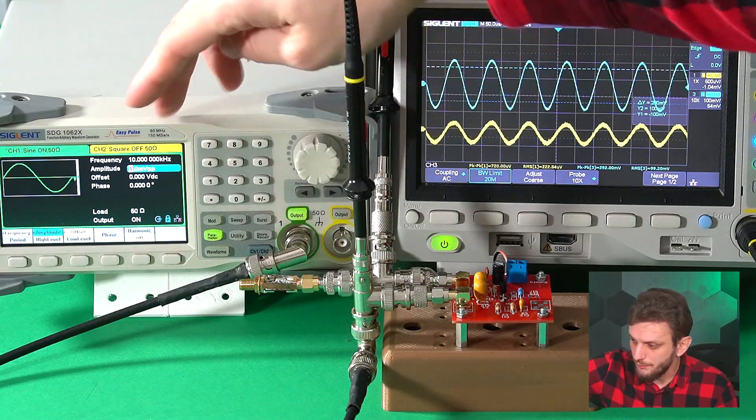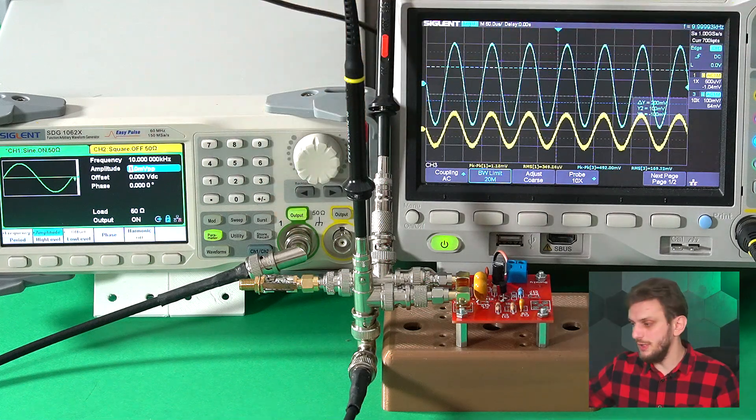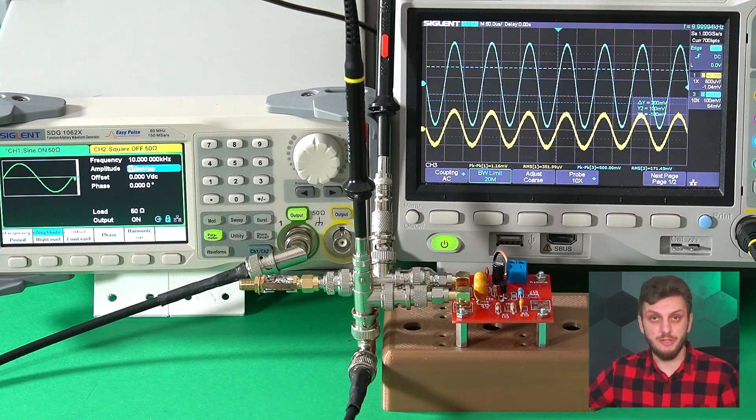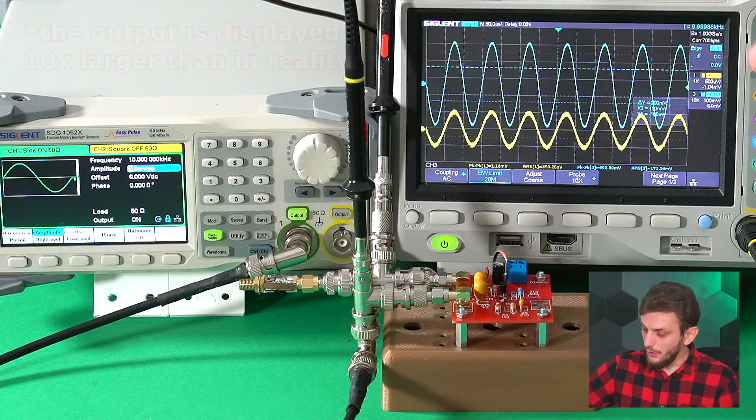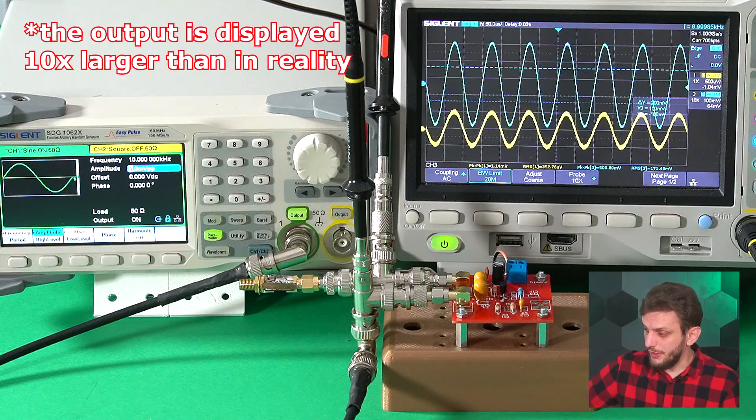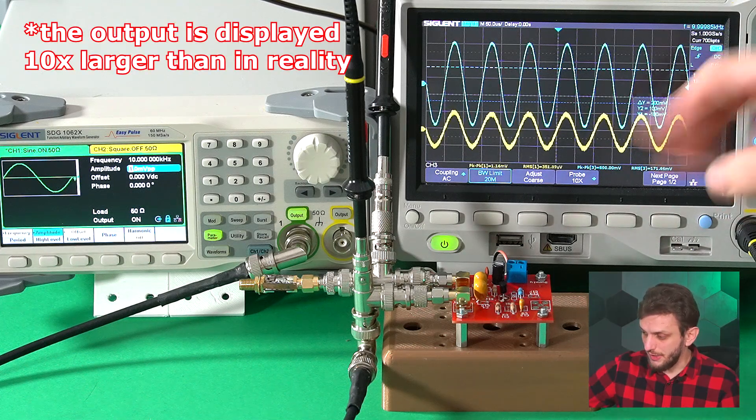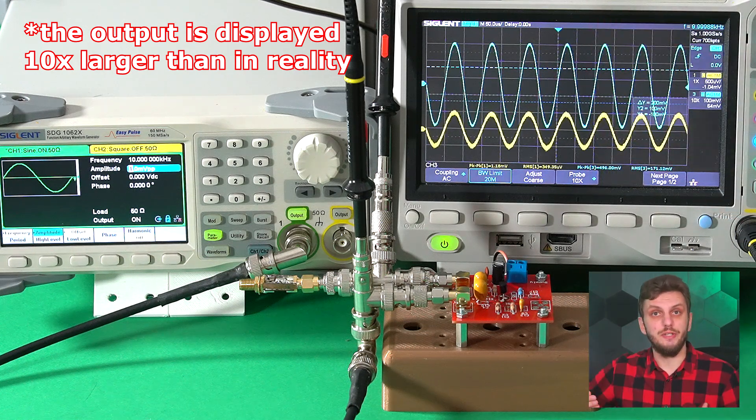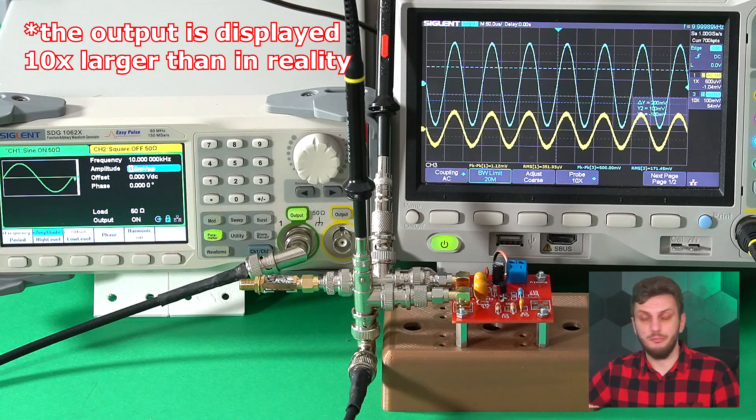If we turn on the signal generator, starting off with a very small signal, we can see our input signal is 1.1 millivolts peak to peak. We can clearly see the voltage gain of the amplifier, so the output signal is 500 millivolts peak to peak, and we can also see that the two signals are in phase, so this is a non-inverting amplifier.